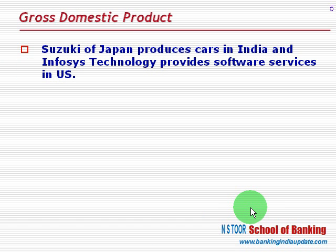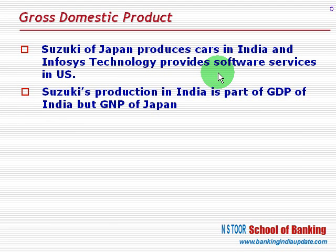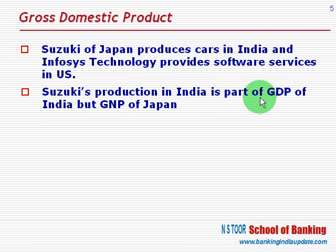Here is another example to make this more clear. Suzuki of Japan produces cars in India, and Infosys Technology, an Indian company, provides software services in the US. How will their production be considered in different countries? Suzuki's production in India is part of the GDP of India, but it is part of the GNP of Japan.